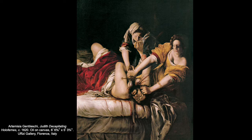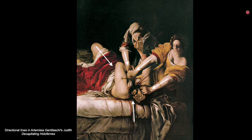Artemisia Gentileschi's Judith Decapitating Holofernes is a great example of how an artist can use various elements to create visual emphasis. Gentileschi utilizes contrasting values — a dark background against bright light that serves as a spotlight — to emphasize the arms and action. She also uses directional line that allows us to follow along the arms and other limbs in the image towards the focal point on the victim's head or on the spurting blood, the violent action of the story.